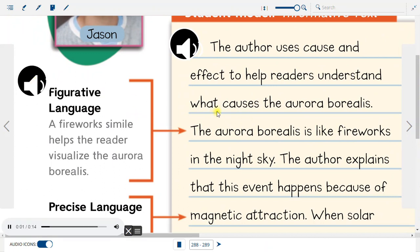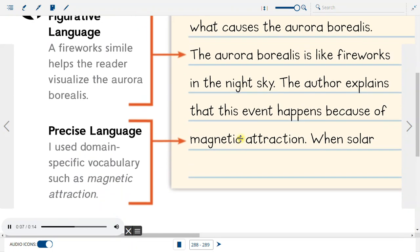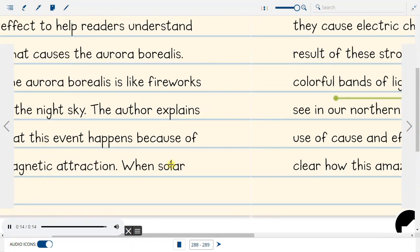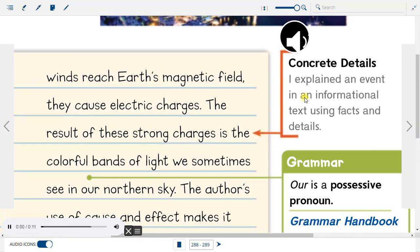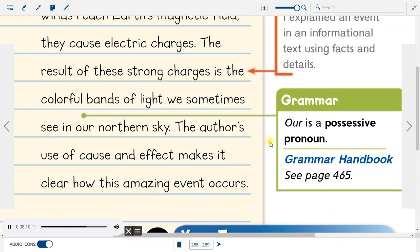Figurative Language: A firework simile helps the reader visualize the aurora borealis. Precise Language: I used domain-specific vocabulary such as magnetic attraction. Concrete Details: I explained an event in an informational text using facts and figures. Grammar: Our is a possessive pronoun.